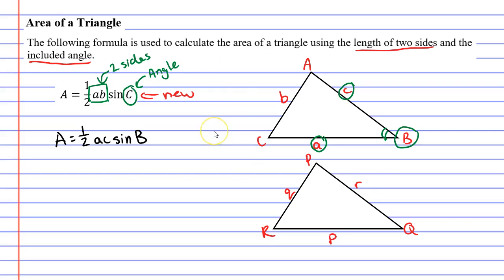So let's say we wanted to find the area of the triangle using angle r, using side lowercase q and the side lowercase p, for example. Our formula would become area equals half our two sides p and q and then we would write sin capital R for our angle.